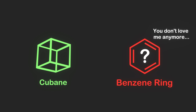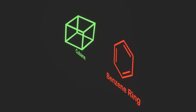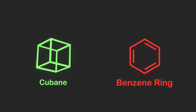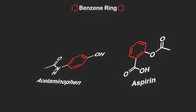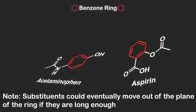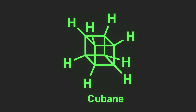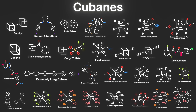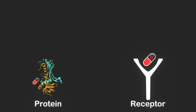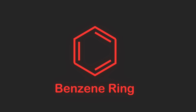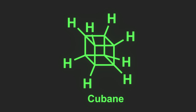So why would medicinal chemists want to replace benzene? One reason is because benzene is flat but cubane is a cube. When you put substituents on a benzene ring, they'll always be constrained by the flat shape of the ring. For cubane, however, this is not the case — since cubane is 3D, you can have substituents sticking off in 3D space. This can be useful for making an API that interacts better with its target, such as a specific protein or receptor. Substituting benzene with cubane could lead to better or altered binding to the target.